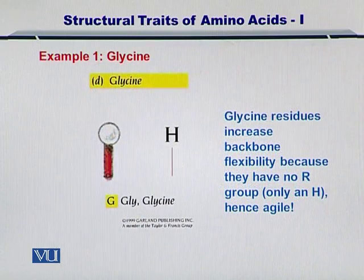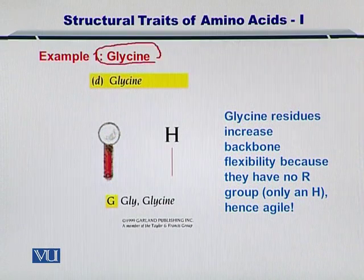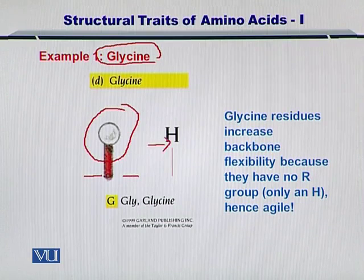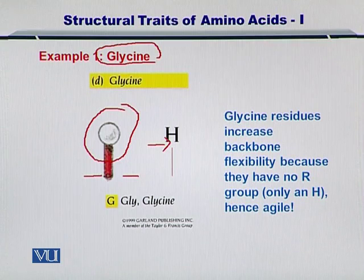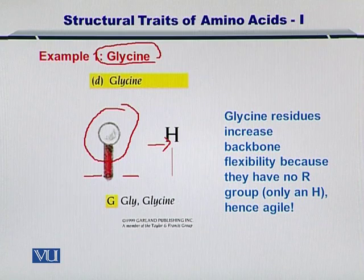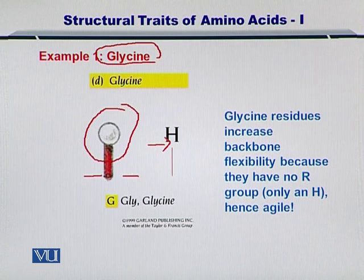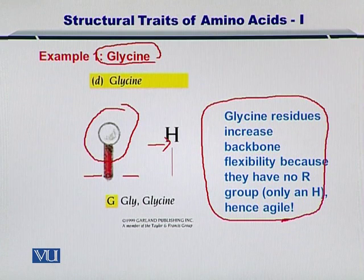Let's take an example. Here we have the amino acid glycine, and as you can see, besides the amine and the carboxyl group, the R group is just a hydrogen — or the R group can be called as absent in the case of glycine. Glycine is the smallest of all amino acids, but because it is small, it is flexible. Its agility helps the polymer chain to be flexible. So if you have a lot of glycines in the polymer chain, then the protein will be flexible. This is a very important property because all proteins are folded and therefore must be flexible, and glycine helps you achieve that.